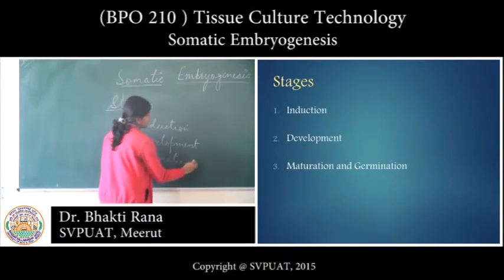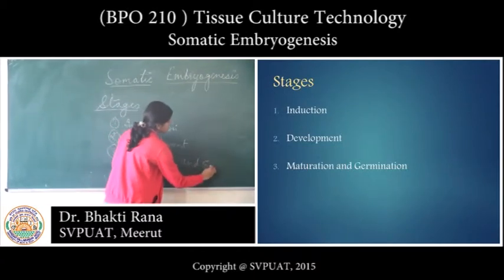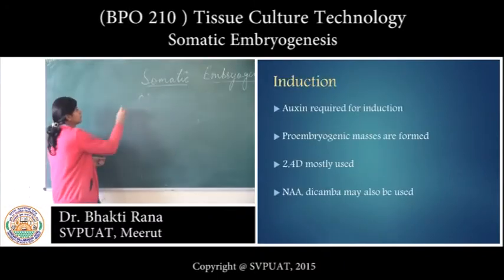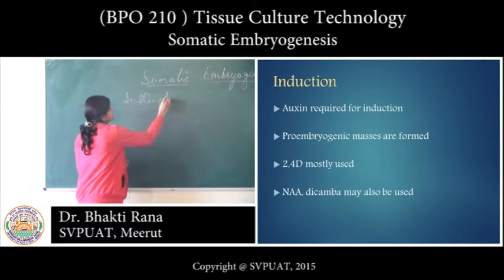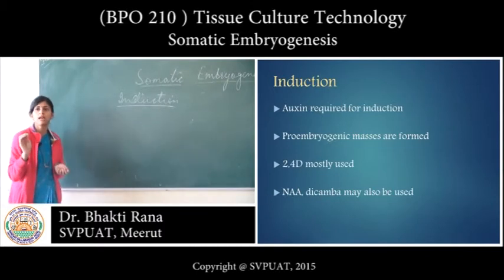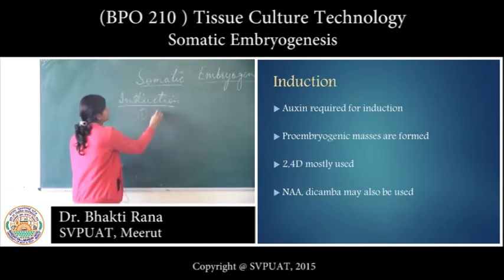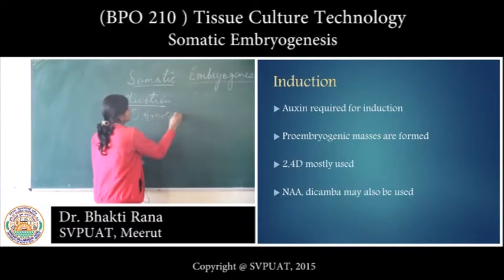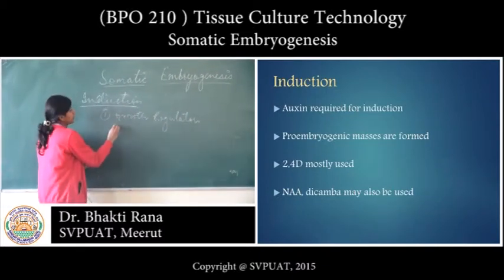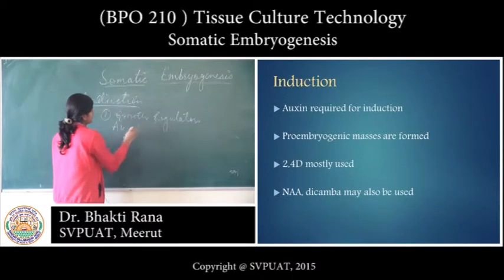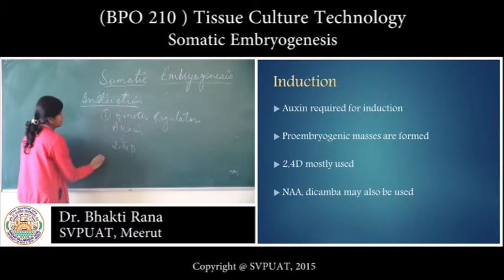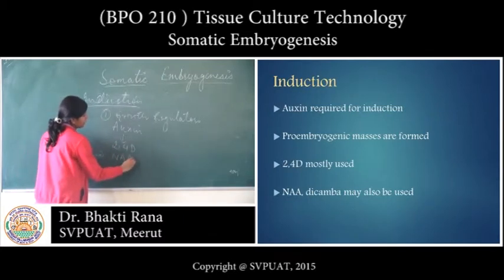For induction, you use a plant cell and growth regulators. For growth regulators, you will use auxin — specifically 2,4-D — and you can also use NAA or dicamba.